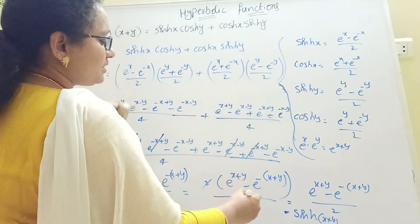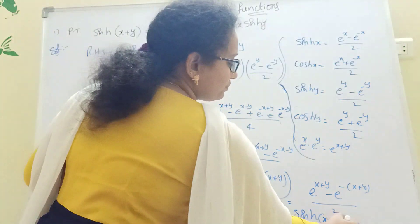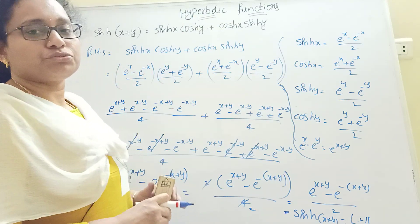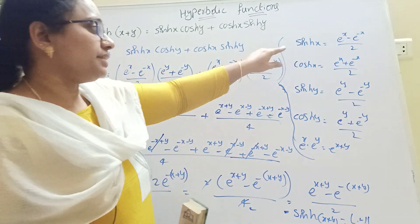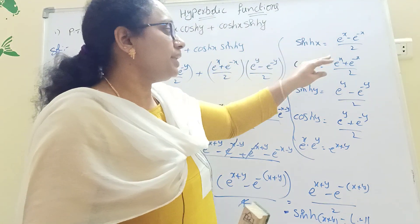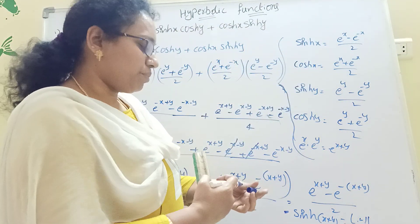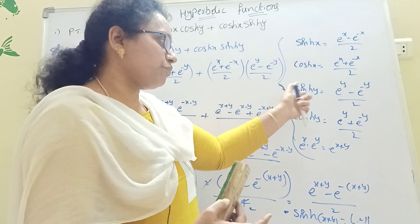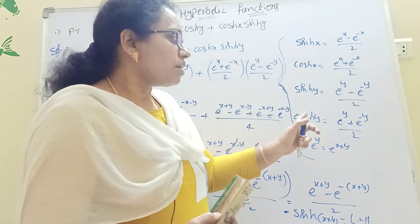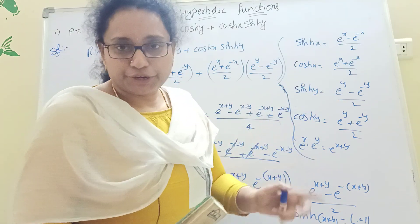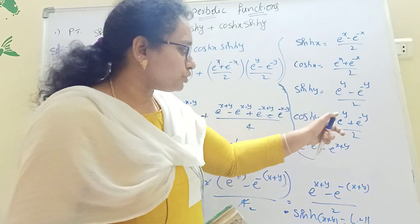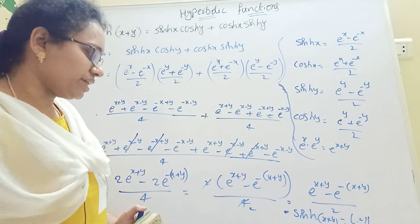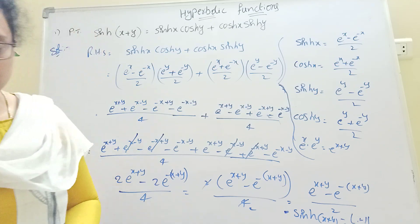This is sinh(x+y), that is the left-hand side. So the formula h1 is done, hx formula is done, cosh formula is done — at the time y is done, cos x is done. The easy value is done.